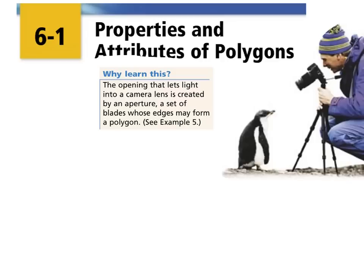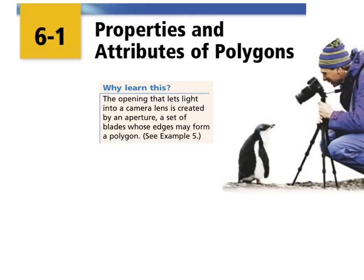We are in Chapter 6, which talks about polygons and quadrilaterals. In Section 6.1, we're going to talk about the properties and attributes of polygons. The good news is that you'll know the basic shapes. But we're also going to talk about new concepts involving the angle sum theorems and different shapes other than triangles.